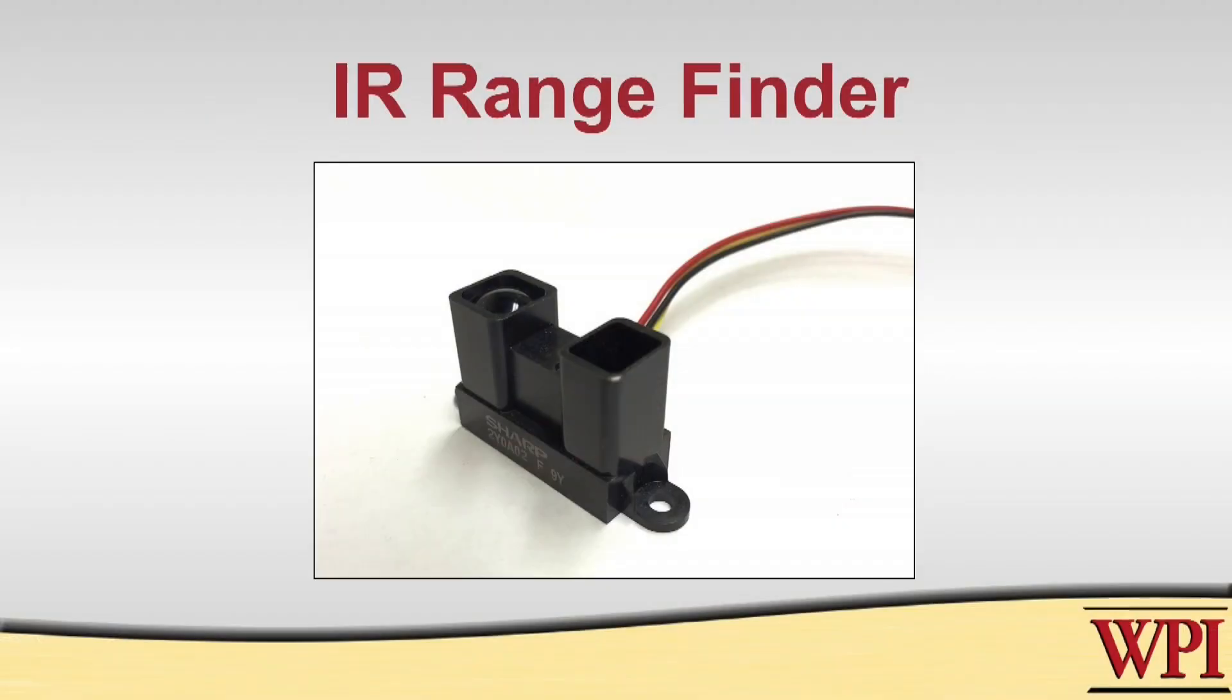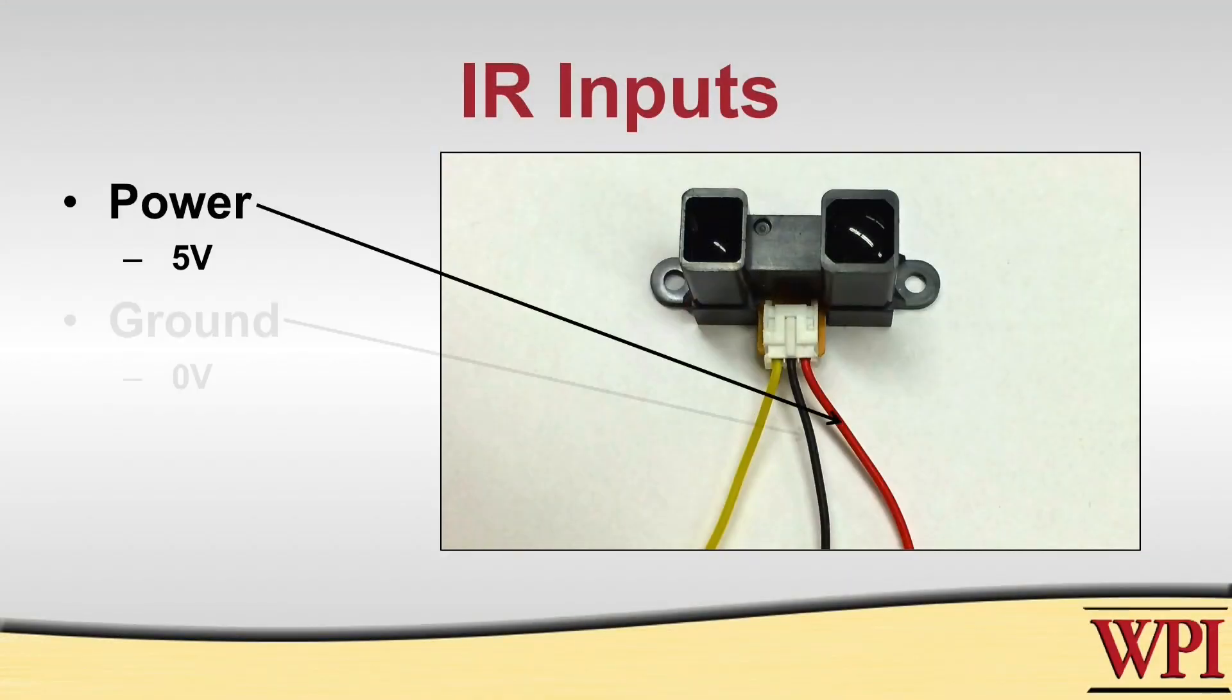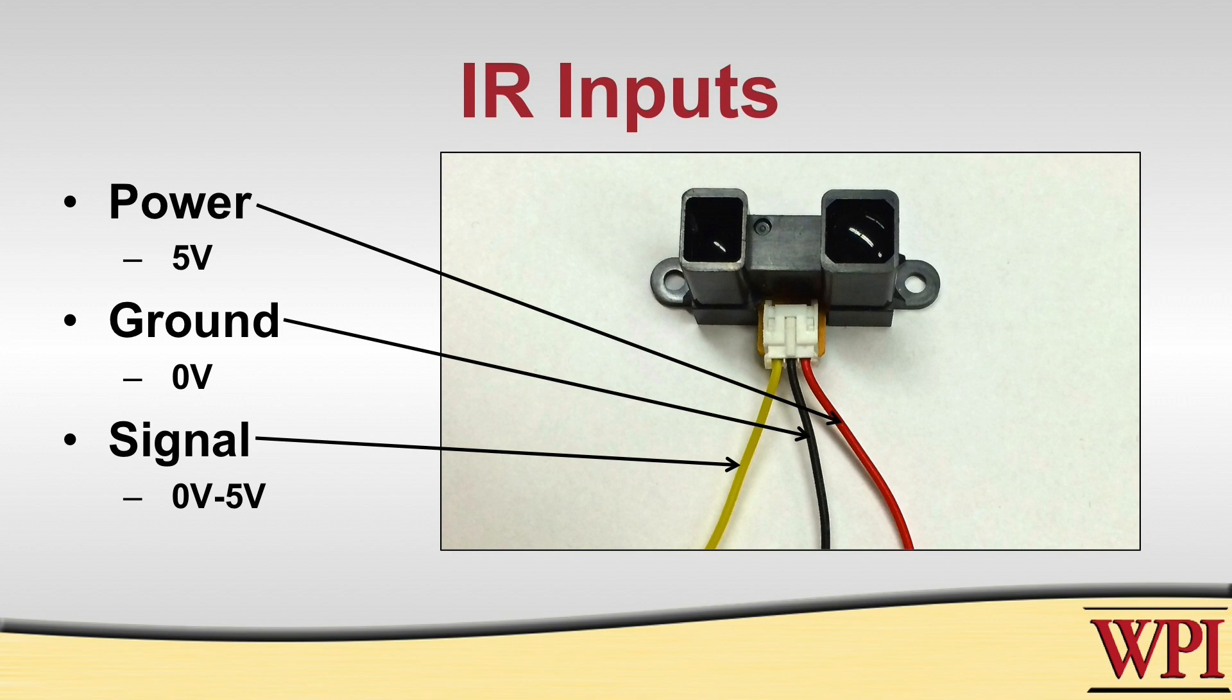We're going to start by looking at an IR range sensor made by Sharp. These are analog devices. They have three terminals: power, ground, and the output signal, which is a voltage that's proportional to the range.